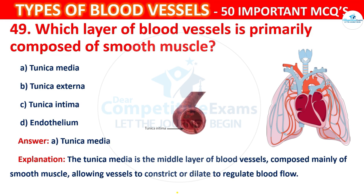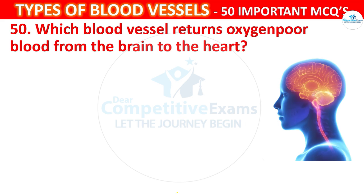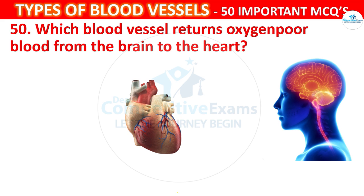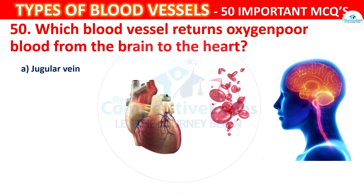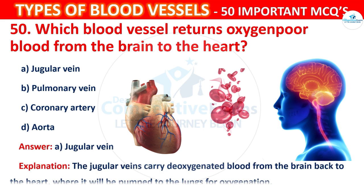Question 50. Which blood vessel returns oxygen-poor blood from the brain to the heart? Options: Jugular vein, Pulmonary vein, Coronary artery, or Aorta. The correct answer is A, Jugular vein. The jugular veins carry deoxygenated blood from the brain back to the heart, where it will be pumped to the lungs for oxygenation.